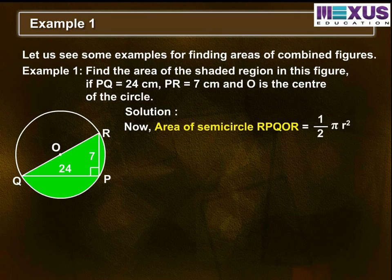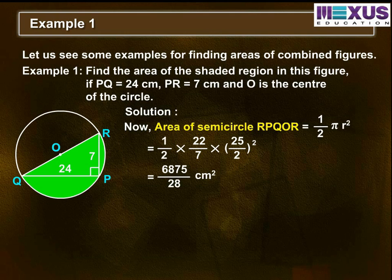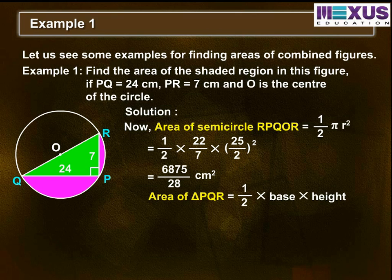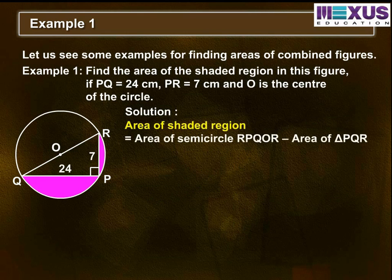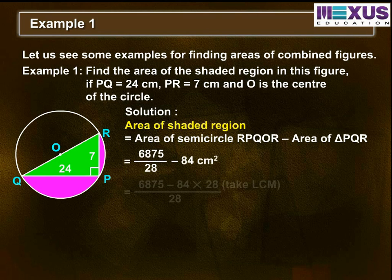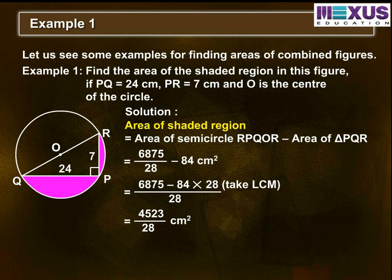Now we will find the area of semi-circle RPQOR, which is equal to half pi R squared. By substituting the value, we get 6875 divided by 28 cm squared. Next, find the area of triangle PQR equal to half base into height, that is, half into PQ into PR. We get 84 cm squared. Finally, the area of the shaded region equals the area of semi-circle RPQOR minus the area of triangle PQR. So we get 4523 divided by 28 cm squared, which is equal to 161.53 cm squared.